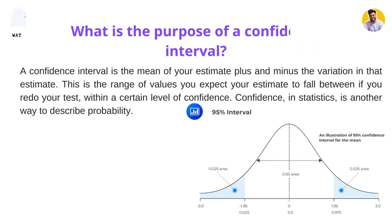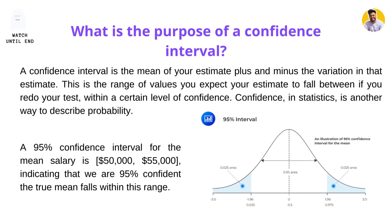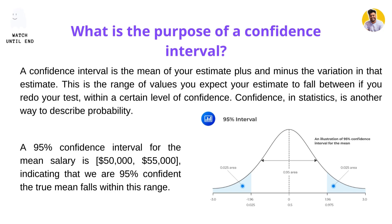Our next interview question is: what is the purpose of a confidence interval? A confidence interval is the estimate plus and minus the variation in the estimate — a range of values within which you can expect your estimated value to fall with a certain level of confidence. Confidence in statistics is actually called probability. For example, a 95% confidence interval for a mean salary of $50,000 to $55,000 indicates we are 95% confident that the true mean salary will fall between that range. You can see this in the graph — the shaded area represents where the salary will fall with 95% probability.